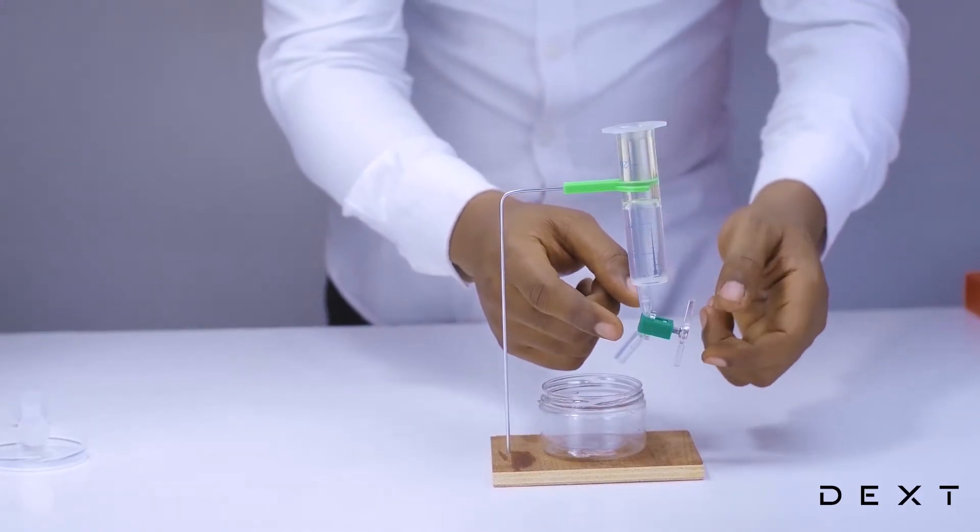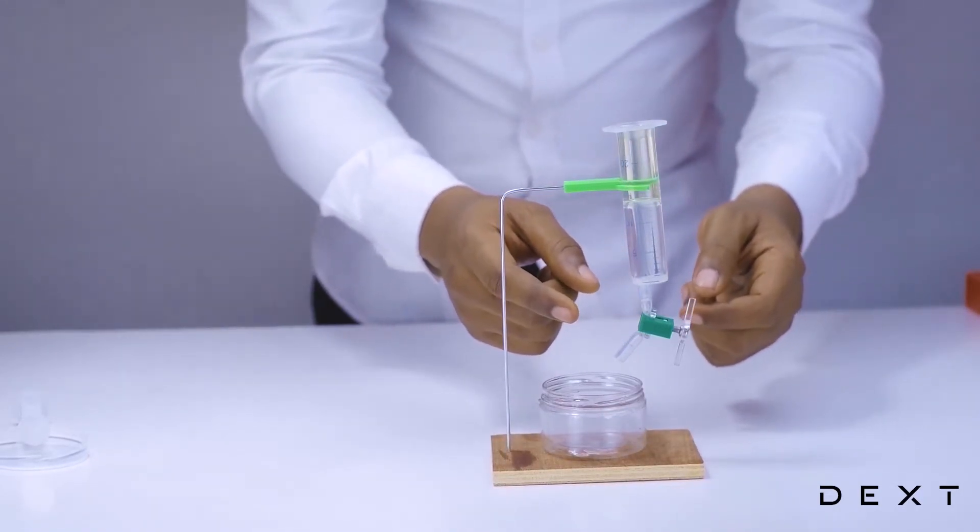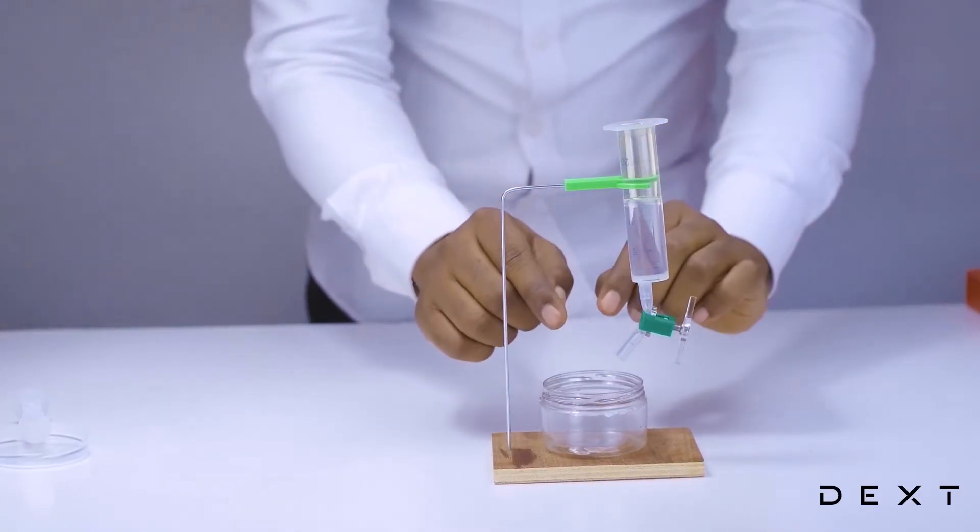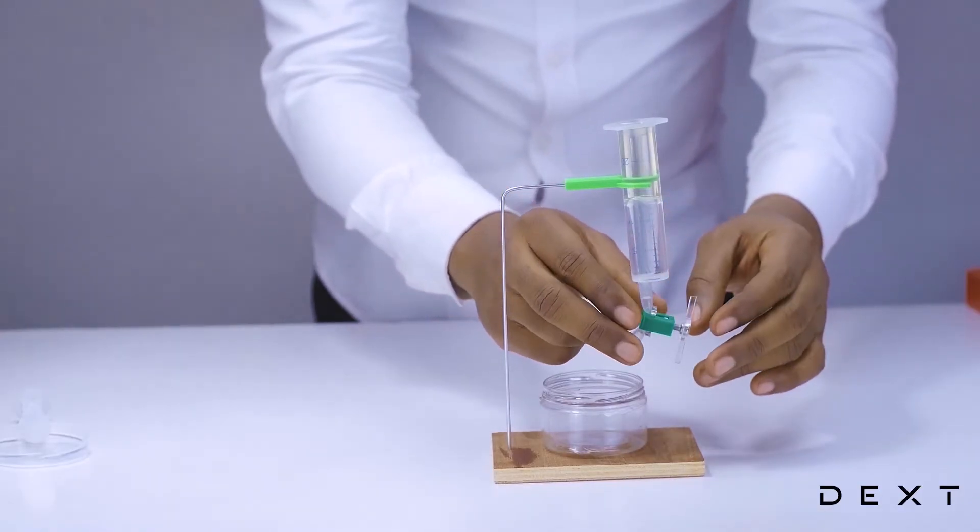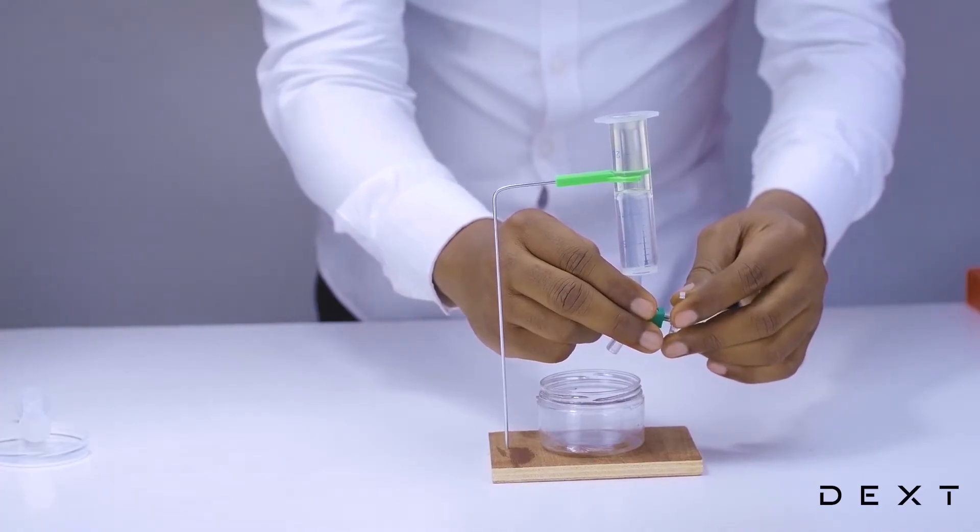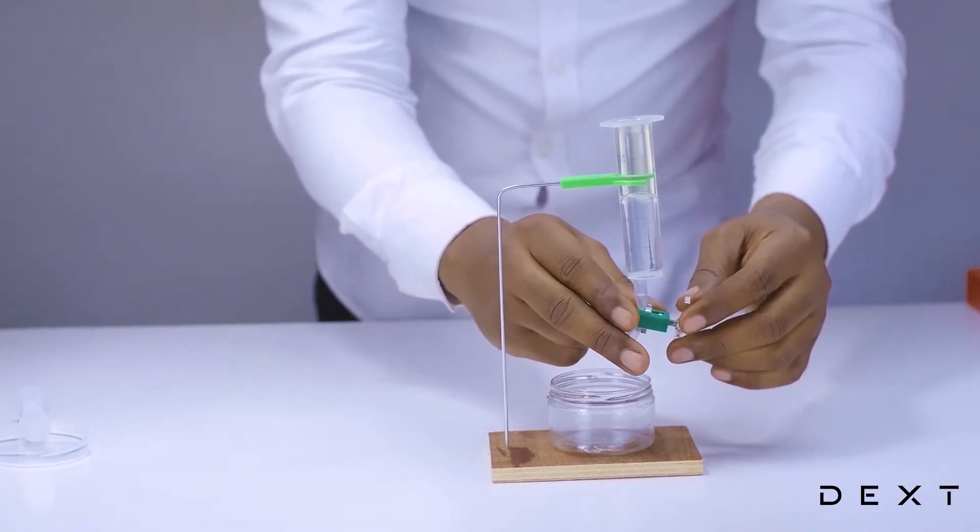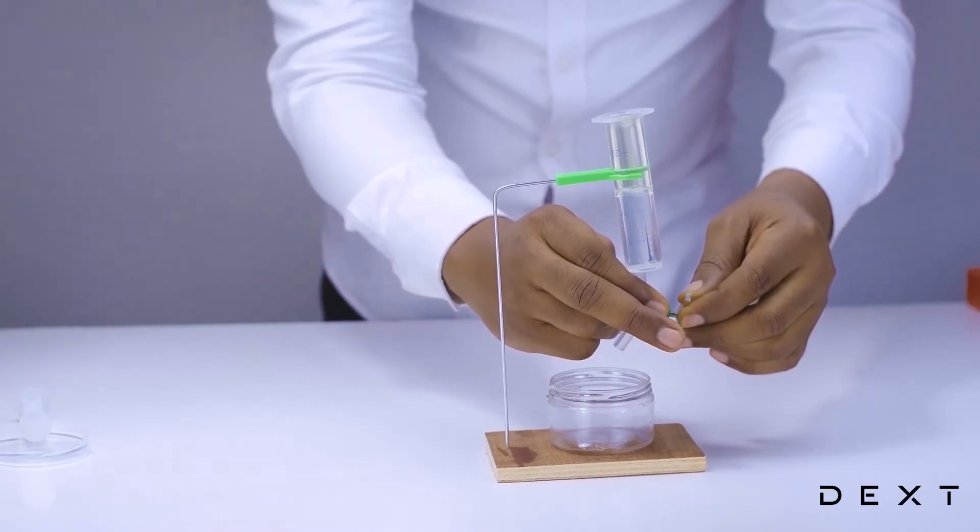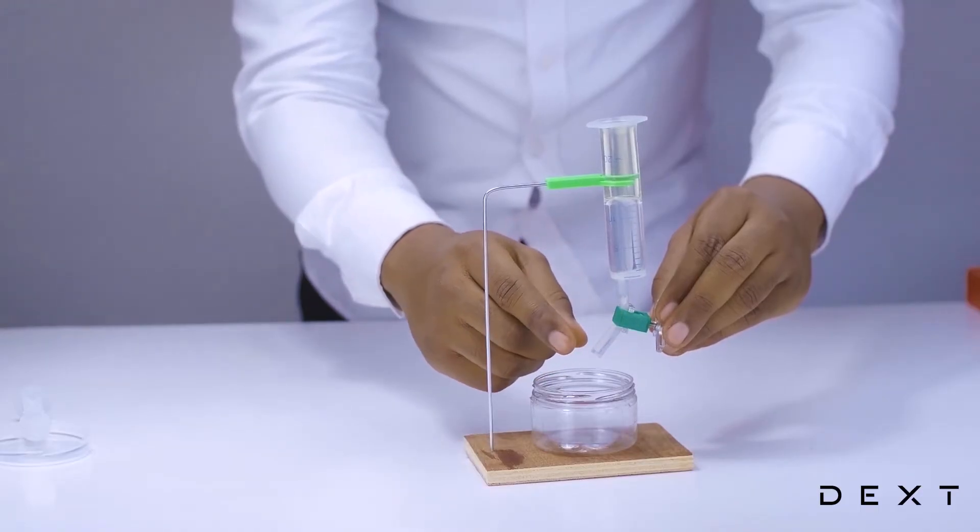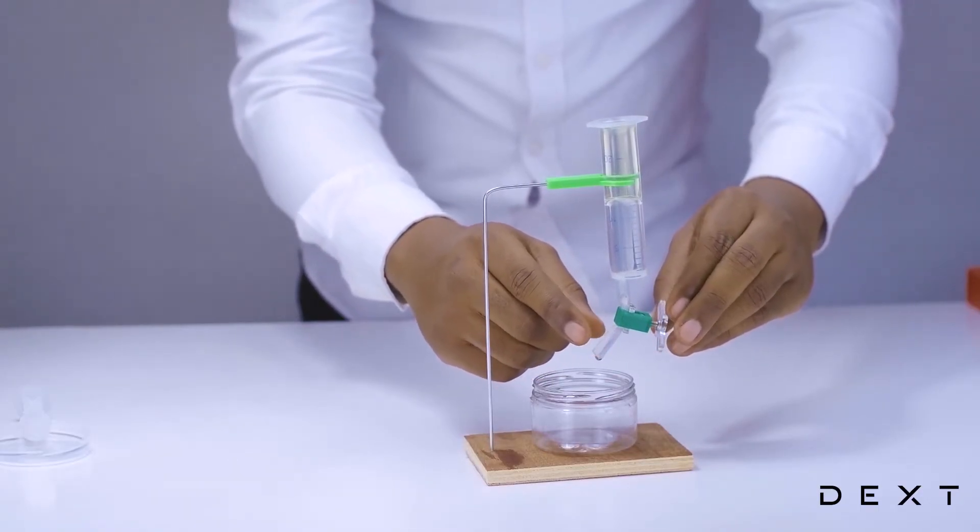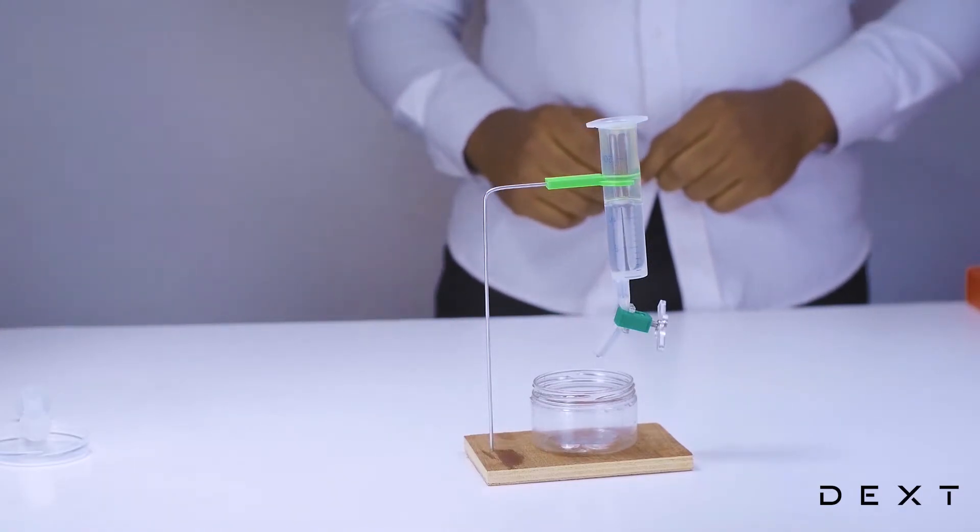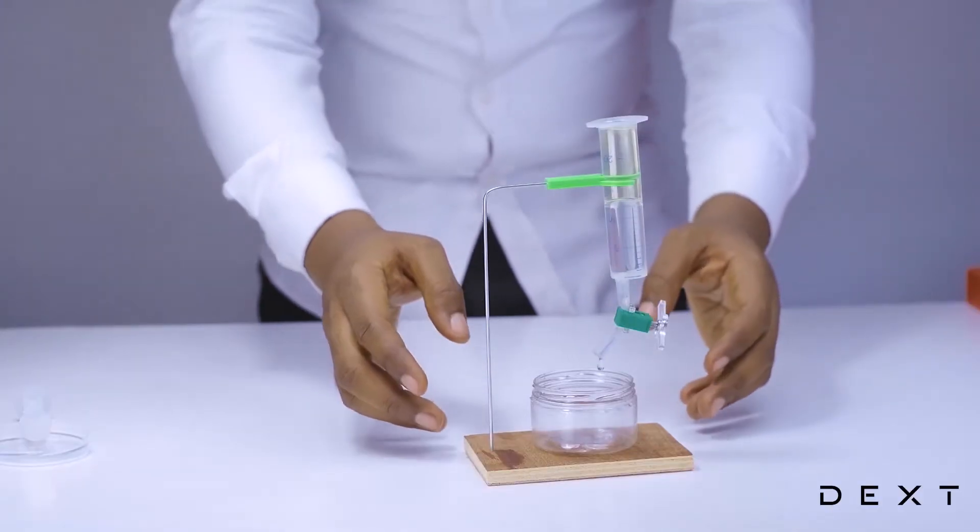Okay. So after you've left your setup for about 15 minutes, you are going to gently open your tap until you see the liquid at the base, in this case the water, starts to drip. There we have it. Our water has started dripping. We are going to leave it this way for some time until all of the liquid at the base, in this case the water, is completely drained.